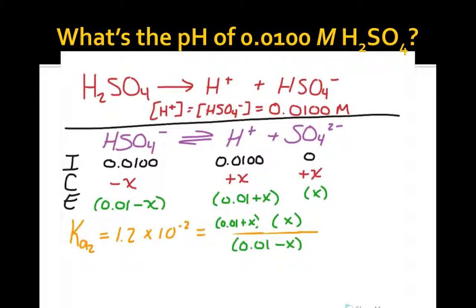Because the Ka of this equilibrium is not extremely small, in fact it's larger than our initial HSO4 minus concentration, we won't be able to use an approximation. The extent of the reaction would be much more than 5% of its initial concentration.